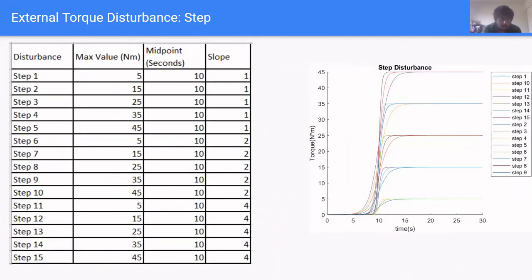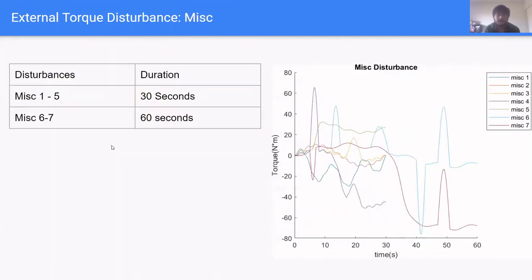For our external torque disturbances for step, we have 15 of these disturbances. The max value ranges from 5 Nm to 45 Nm. The midpoint always occurs at around 10 seconds, and the slope parameter varies from 1 to 4. For our miscellaneous disturbances, it is a combination of sine, step and gust disturbances. The first 5 of these disturbances last 30 seconds, and the last 2 lasted about 60 seconds.